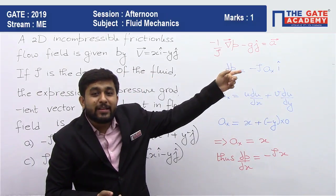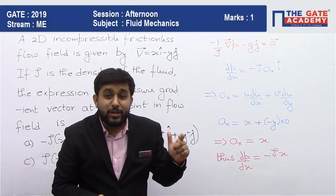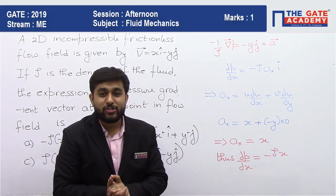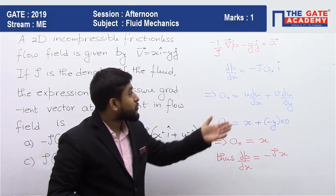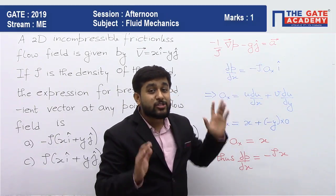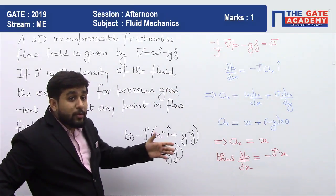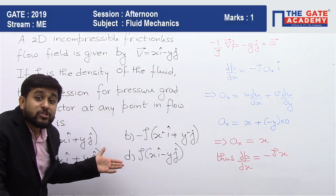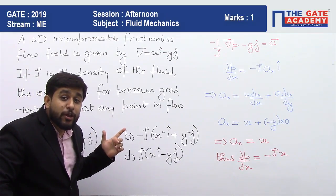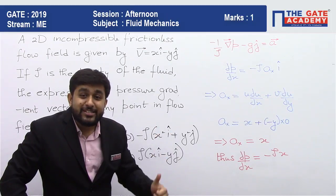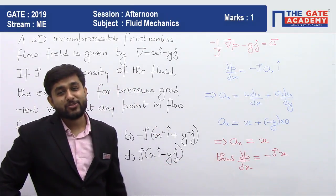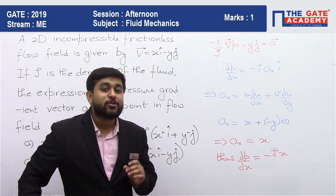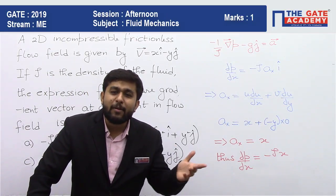So there is a minus g j term also denoting the weight in the downward direction. Now, so basically the gradient of pressure is going to have this term also, acceleration due to gravity also. But if you can make out these options, they do not have a g term. This means they are considering that the vertical direction is the z axis. So basically they are taking x and y as the horizontal directions. So in the pressure gradient, you are left with del P by del x and del P by del y.